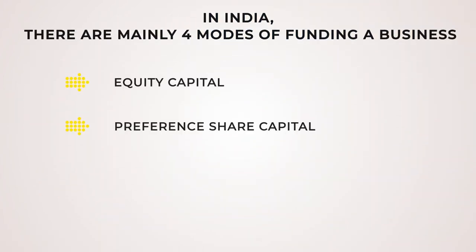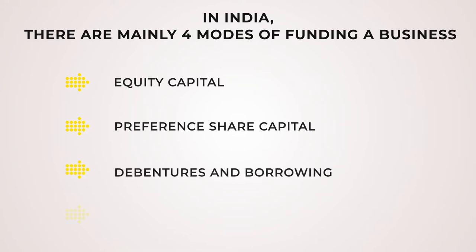The four modes are: equity capital, preference share capital, debentures and borrowing, American Deposit Receipts, Global Deposit Receipts, and Foreign Currency Convertible Bonds.